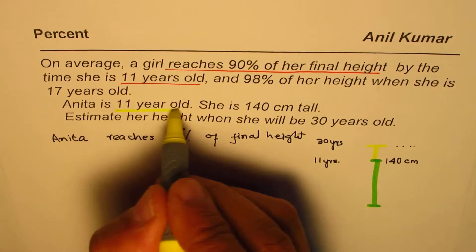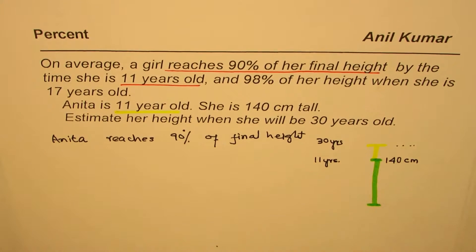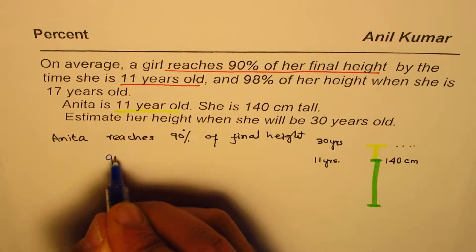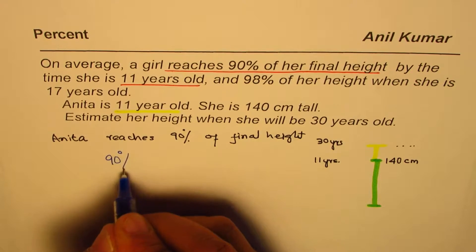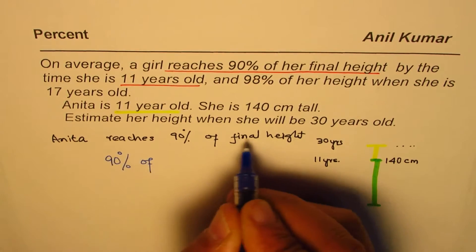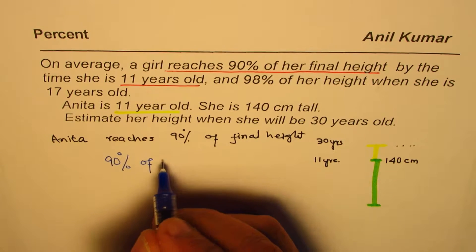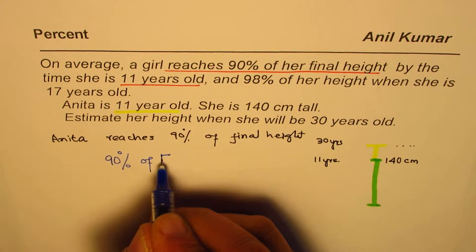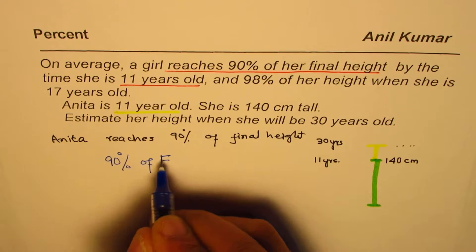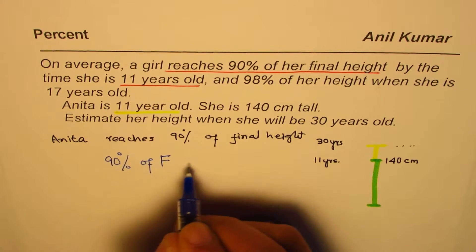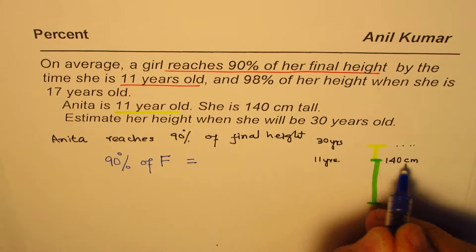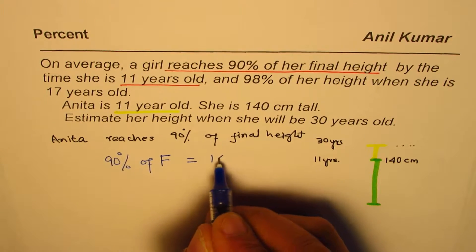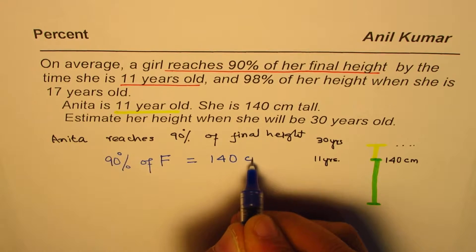That means what? We know her current height is 140 centimeters. So 90 percent of her final height F equals 140 centimeters. Let me say final height is F. So 90 percent of final height F is equal to 140 centimeters.